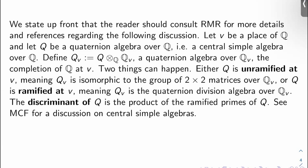Okay, so first some terminology. Let v be a place of Q, so a prime given by an equivalence class of absolute values, and let Q be a quaternion algebra over the rationals, which is a central simple algebra over Q. Define Q_v to be Q tensored up to the rationals completed at v, which is a quaternion algebra over the rationals completed at v.